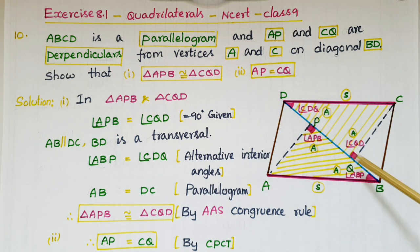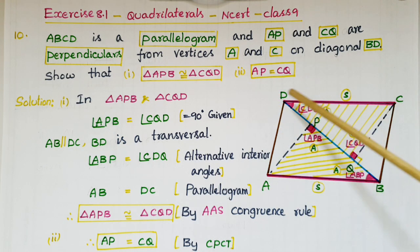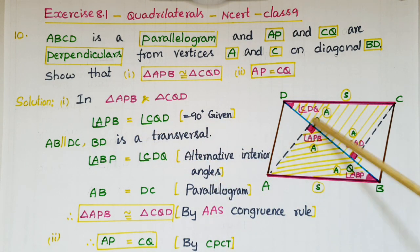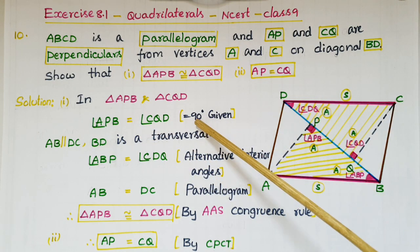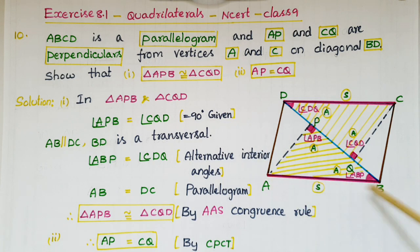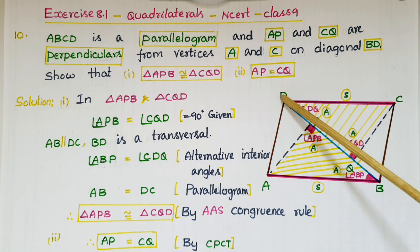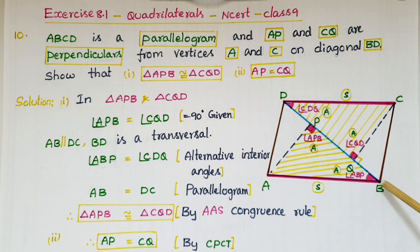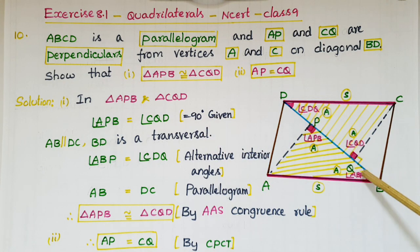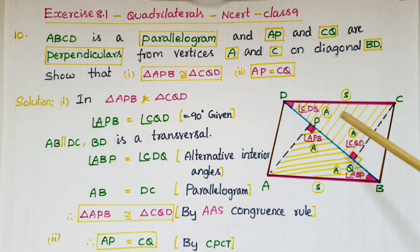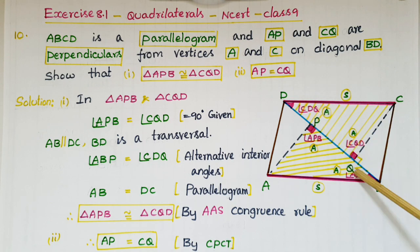So take these two triangles: in triangle APB and triangle CQD, angle APB is equal to angle CQD, that is 90 degrees — given. And AB is parallel to CD, and BD is a transversal line, so these two angles are alternate interior angles and are equal.